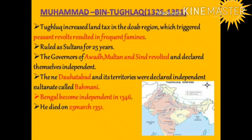Tughluq ruled for 25 years and had to face many revolts from provincial governors. The governors of Awadh, Multan, and Sindh revolted and declared themselves independent. In South India, several states arose — Daulatabad and the conquered territories declared themselves the independent Bahmani Sultanate. Madurai was proclaimed a separate Sultanate in 1334, and Bengal became independent in 1346. Muhammad bin Tughluq died on 23 March 1351.